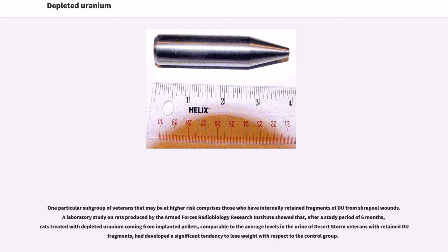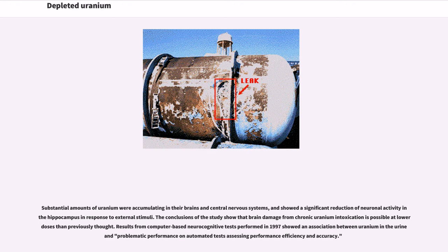One particular subgroup of veterans that may be at higher risk comprises those who have internally retained fragments of DU from shrapnel wounds. A laboratory study on rats produced by the Armed Forces Radiobiology Research Institute showed that, after a six-month study period, rats treated with depleted uranium from implanted pellets — comparable to average levels in the urine of Desert Storm veterans with retained DU fragments — had developed a significant tendency to lose weight. Substantial amounts of uranium were accumulating in their brains and central nervous systems, and showed a significant reduction of neuronal activity in the hippocampus. The study showed that brain damage from chronic uranium intoxication is possible at lower doses than previously thought. Computer-based neurocognitive tests in 1997 showed an association between uranium in the urine and problematic performance on automated tests assessing efficiency and accuracy.